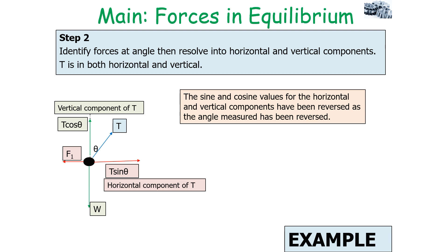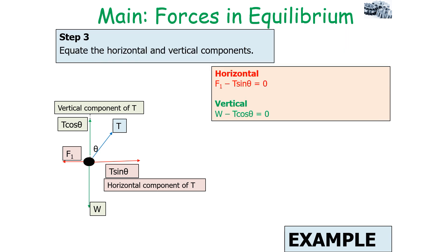Next, identify the tension T acting at angle theta, which has both horizontal and vertical components. Resolve T: the vertical component is T cos theta and the horizontal component is T sin theta. Note that sine and cosine are swapped from the usual convention because the angle is measured from the vertical — the best approach is to draw the right-angle triangle and use trigonometry. Equating components: horizontally, F1 minus T sin theta equals zero, so F1 equals T sin theta; vertically, W minus T cos theta equals zero, so W equals T cos theta.